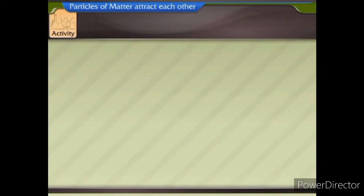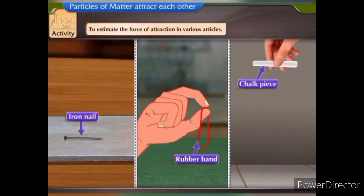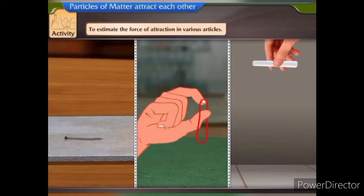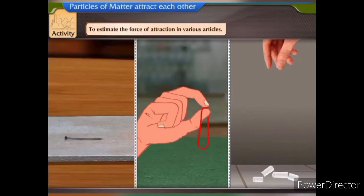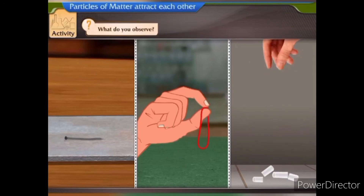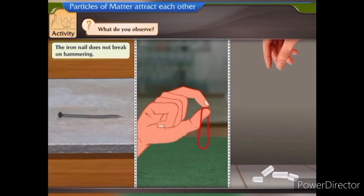Here is another activity to estimate the force of attraction in various articles. Take some articles like an iron nail, a rubber band and a piece of chalk. Try to break them by hammering, stretching, and cutting them respectively. What do you observe? The iron nail does not break on hammering.